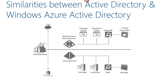Windows Azure Active Directory is not just Windows Server Active Directory running in a virtual machine. However, there are similarities between them, as this diagram illustrates. Just as Server Active Directory on-premise provides identity and access to applications like Exchange, SharePoint, and line-of-business applications, Windows Azure AD provides identity and access for cloud versions such as Office 365. For developers, LDAP is used for Server AD, while in Windows Azure the counterpart is the Graph API for querying Azure Active Directory.